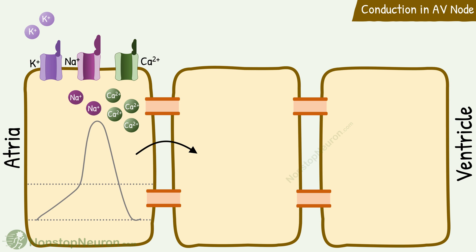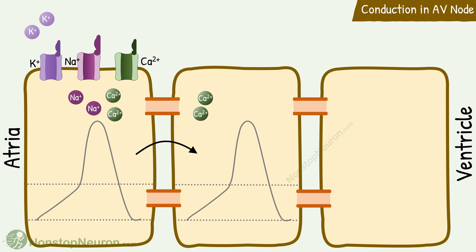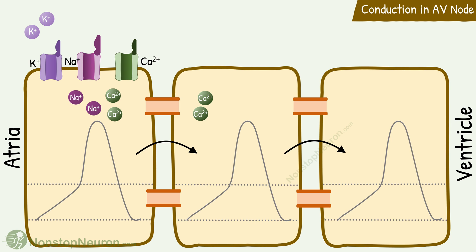As the action potential reaches the other end of the cell, the next cell is excited. Positive ions diffuse from the excited cell to the next cell via gap junctions. This contributes to the rise in membrane potential towards the threshold, and an action potential is triggered. Then the next cell is stimulated in the same manner. In this way, impulse passes from one cell to the next and eventually leaves the AV node at the ventricular side.